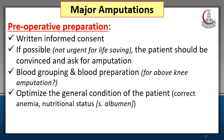If amputation is not urgent, the general condition of the patient should be optimized for better healing. This includes correction of low serum albumin and severe anemia. In urgent conditions, these are corrected in the operative and post-operative phase. Consider the use of prophylactic antibiotics. Amputations in limbs with obvious infection or contamination will require therapeutic antibiotic courses.